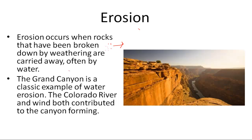The Colorado River contributed to the canyon forming. It caused weathering, which broke down all of the pieces that once filled in this valley, or canyon, and then erosion from water carried them away out of the canyon.